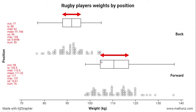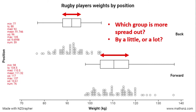Whereas for backs, there's less variation — a lot more common values, a lot more data values clumped in the middle. For the forwards, there's a lot more spread of those data values. So that's what we want to say in our analysis: which group is more spread out. In our case, it's the forwards that are more spread out, and we want to talk about whether that's a little bit more spread out or a lot more spread out.